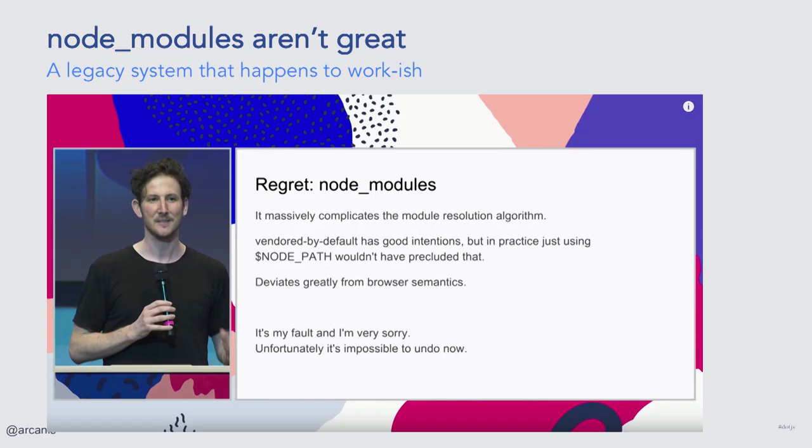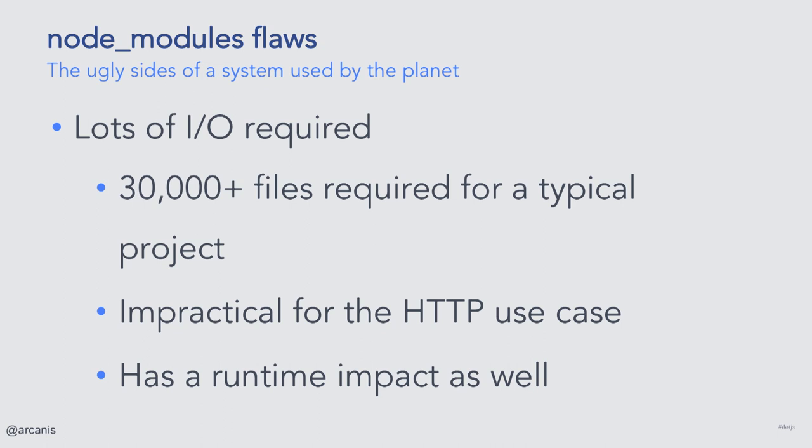One simple fact: while they work, node_modules have a lot of shortcomings that have even been acknowledged by Ryan Dahl, the original author of Node. The very design of node_modules makes them extremely IO-heavy. A staggering amount of files have to be copied from the cache into the project folder, and this for every project you have. Even at runtime, Node has to resolve files dynamically, meaning it has to make a lot of IO calls in order to check whether a file exists or not.